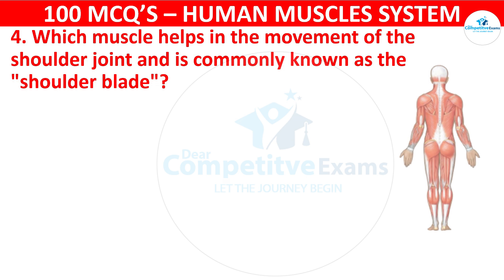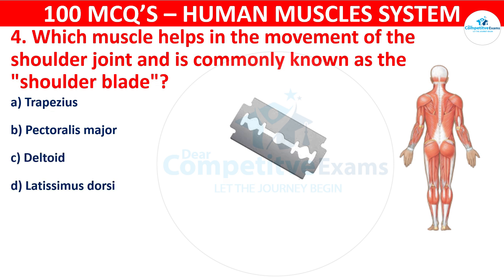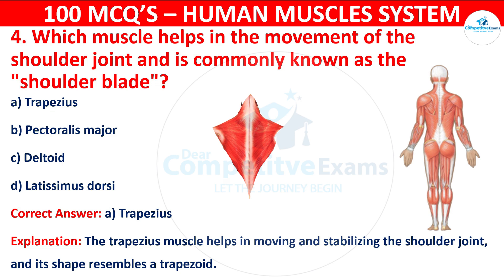Question number four: Which muscle helps in the movement of the shoulder joint and is commonly known as the shoulder blade? Your options are: Trapezius, Pectoralis major, Deltoid, or Latissimus dorsi. The correct answer is A, that is trapezius. The trapezius muscle helps in moving and stabilizing the shoulder joint, and its shape resembles a trapezoid.